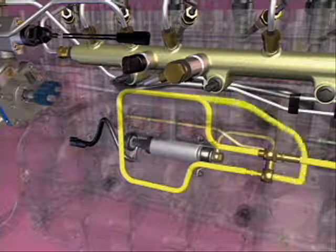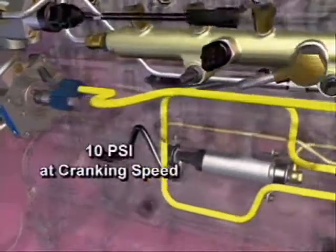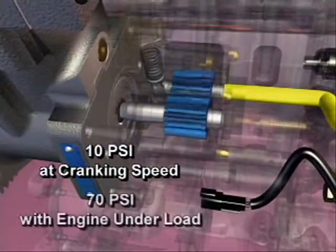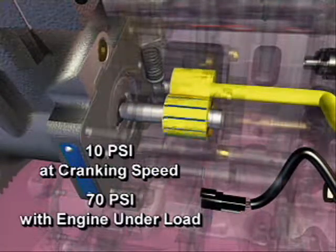Fuel enters the gear pump where it is pressurized to a minimum of 10 psi at cranking speed and 70 psi with the engine under load.